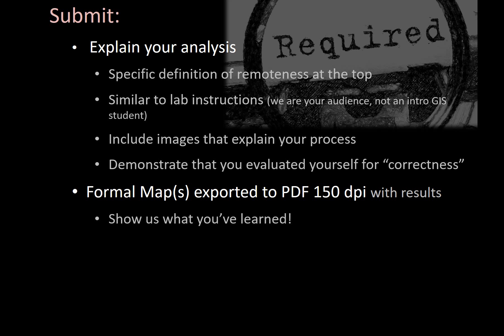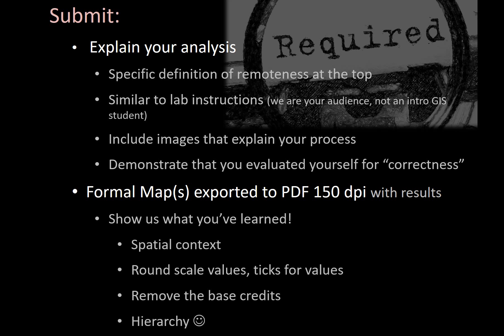With the formal maps, if you haven't seen the feedback on your labs or opened the rubrics to get feedback about tick marks, alignments, and hierarchy, you should do that. Part of your grade will be on your cartography. Provide clear spatial context — this can come from choosing the right basemap or including an inset or locator map. Make sure your scale bar has a round value, like 200 meters, not 190 meters, and that every value has a tick mark. Pull the basemap credits off the basemap, but include credits for all data shown on the map. Don't forget text hierarchy and alignments.